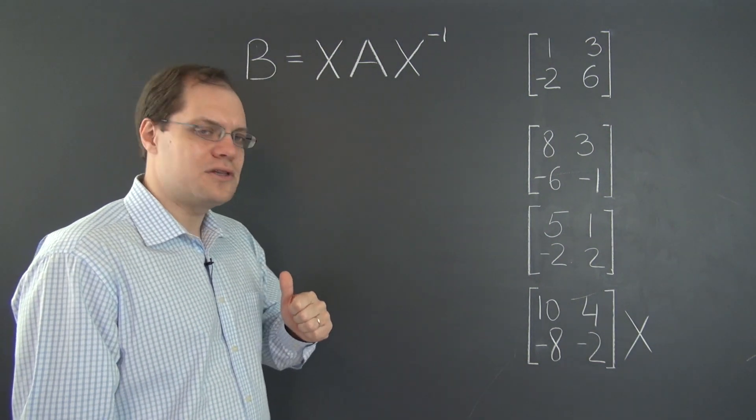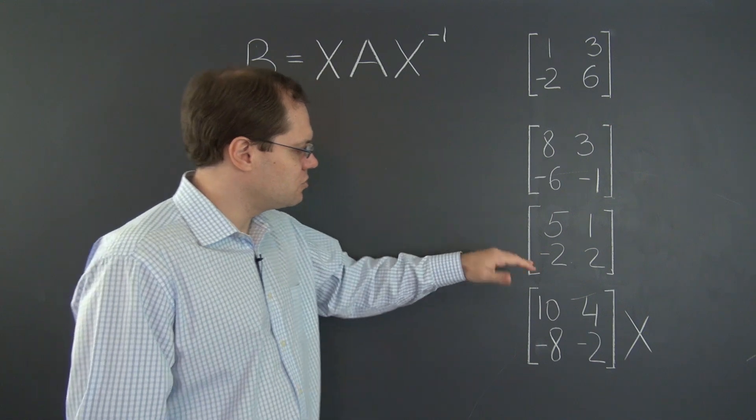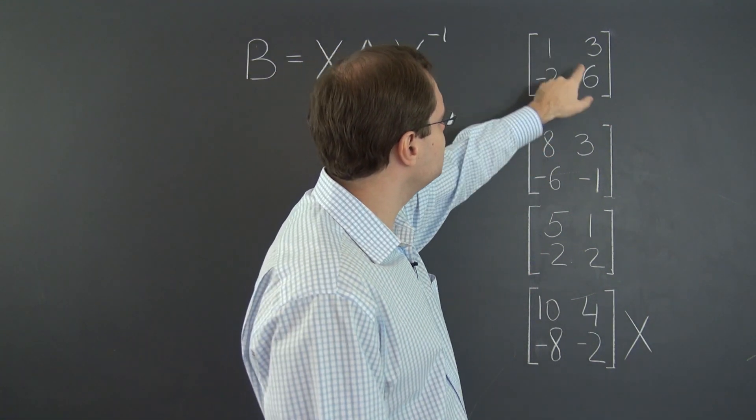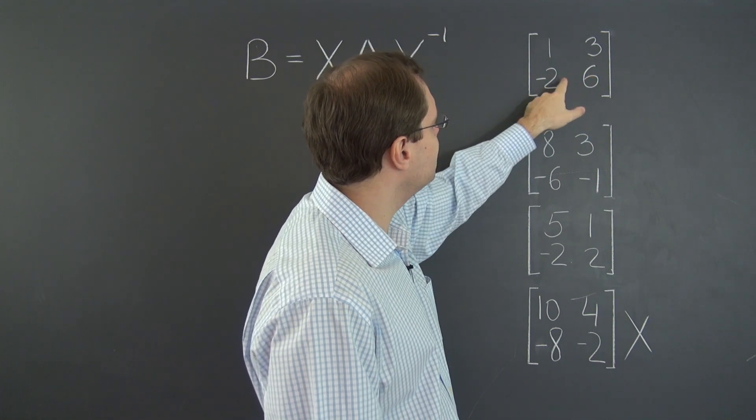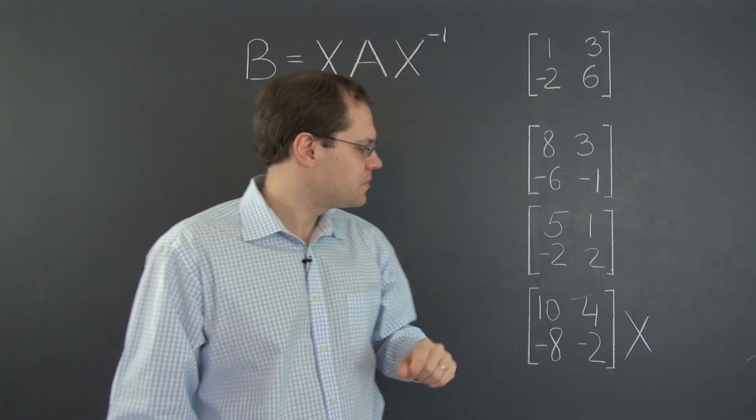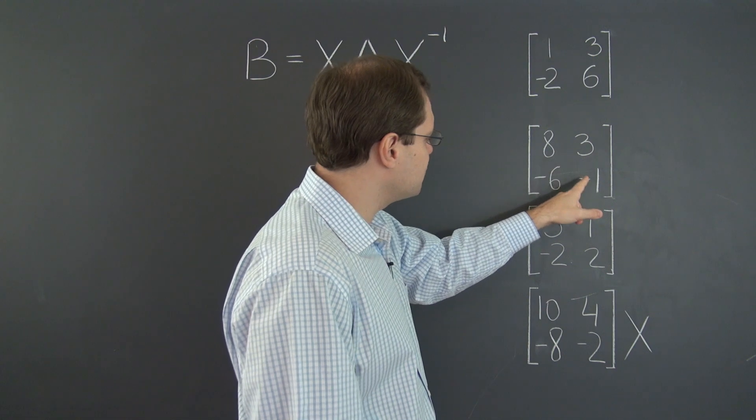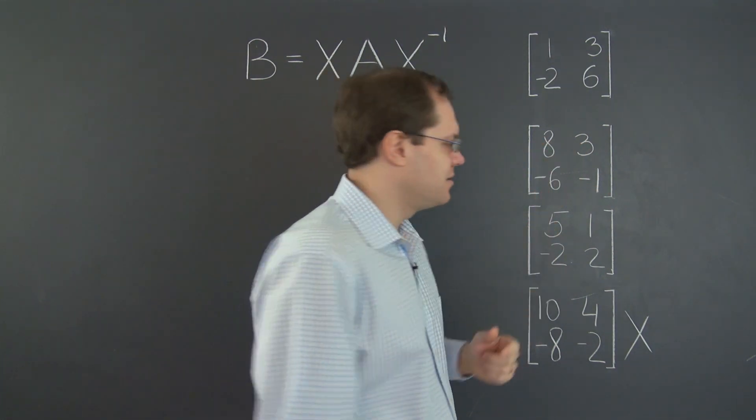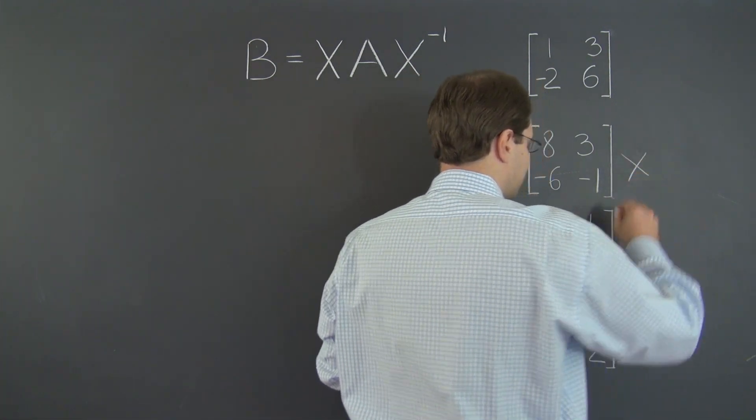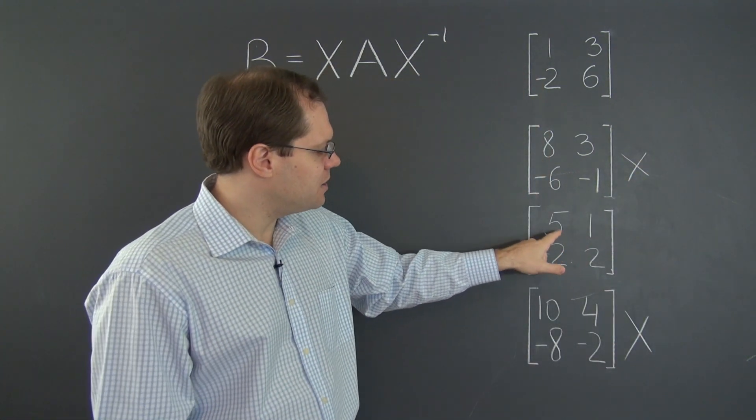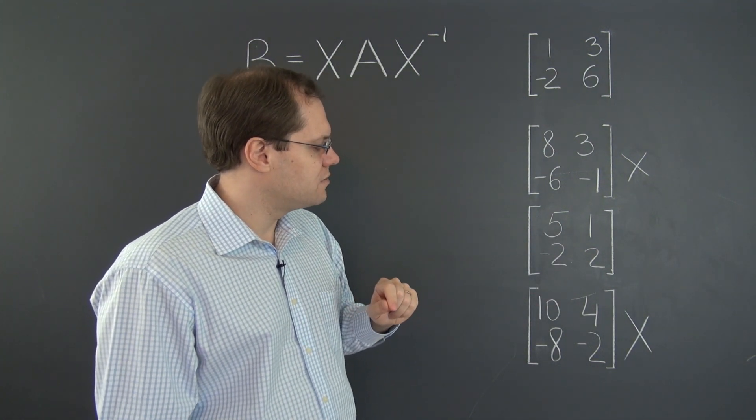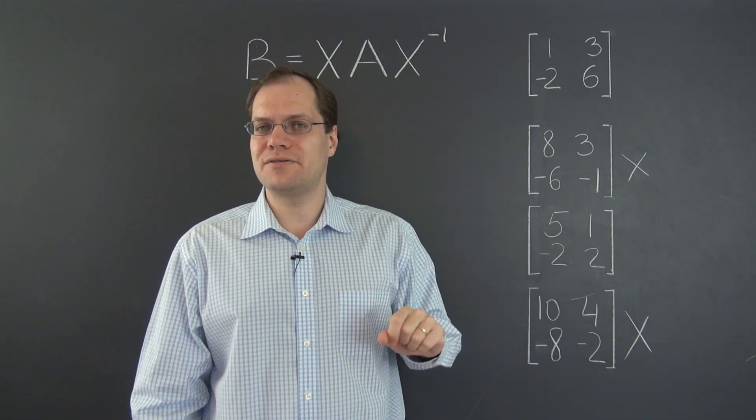So let's see whether we can use that criterion to rule out another matrix. The determinant of our original matrix is 6 plus 6 is 12. So the determinant of this matrix is negative 8 plus 18 is 10. So that excludes this matrix. And for this matrix, it's 10 plus 2, also 12.